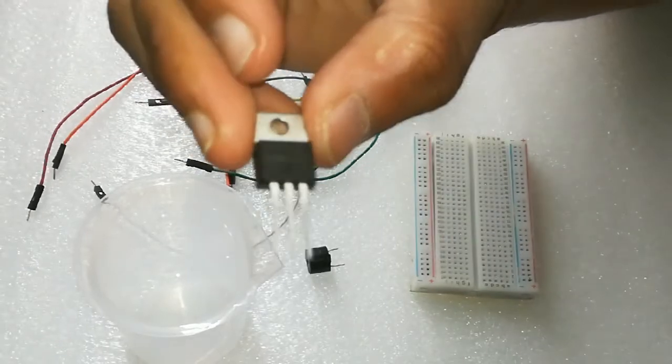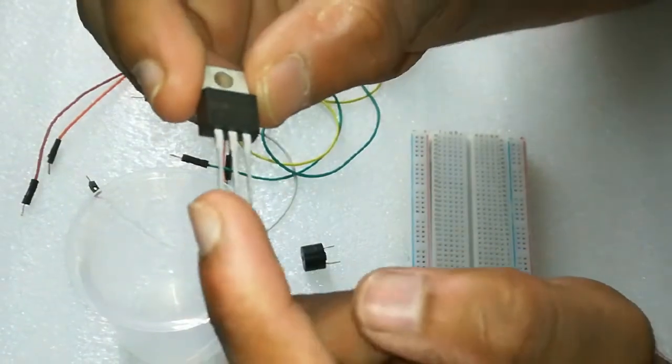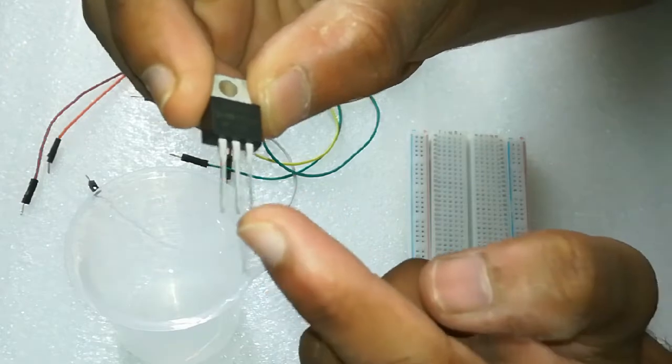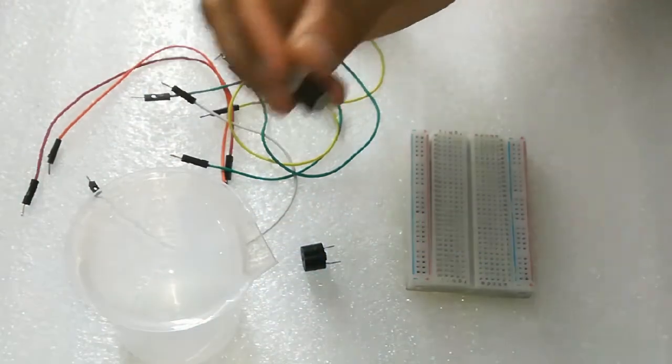So, MOSFET has 3 pins, starting from the left side: gate, and second one is drain, and third one is source.